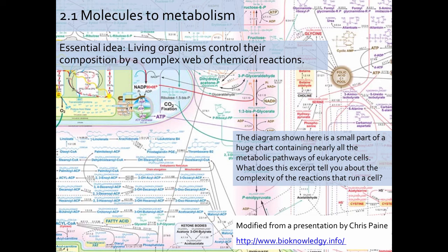This is Topic 2.1, Molecules to Metabolism, in the IB Biology Core Curriculum. The essential idea here is that living organisms control their composition by a complex web of chemical reactions. What you see on this opening slide is a diagram that is a small part of a huge chart containing nearly all the metabolic pathways of eukaryotic cells.